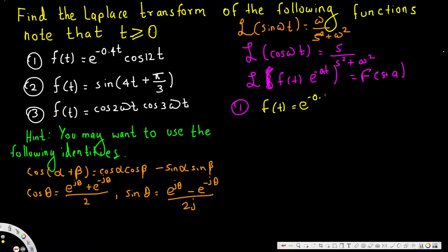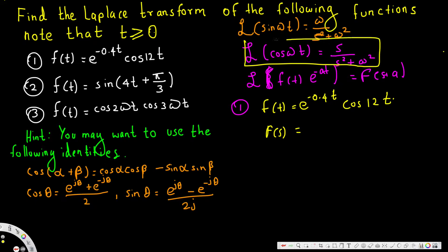Now let's find the Laplace transform of e^(−0.4t) cos(12t). You can see cos(12t) — if we look at the cosine pattern, wherever ω appears we replace it with 12. Here our ω is 12. Also, whenever we have a negative a, it gets added with s — since this is minus, it becomes plus, so this is s plus a.